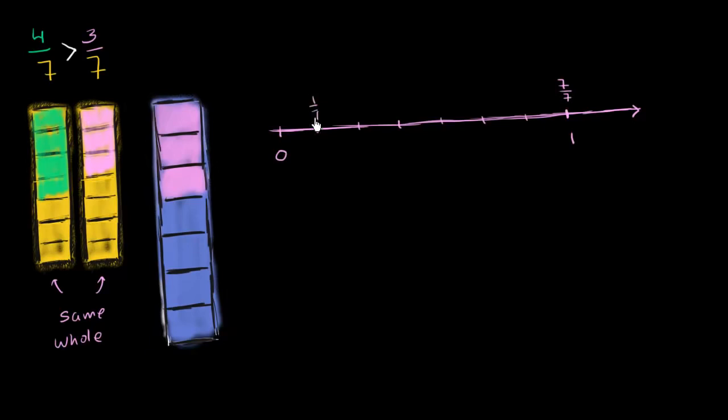And this right over here is 1 seventh, 2 sevenths, 3 sevenths, 4 sevenths, 5 sevenths, and 6 sevenths.